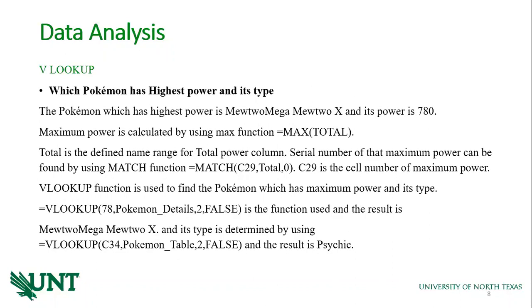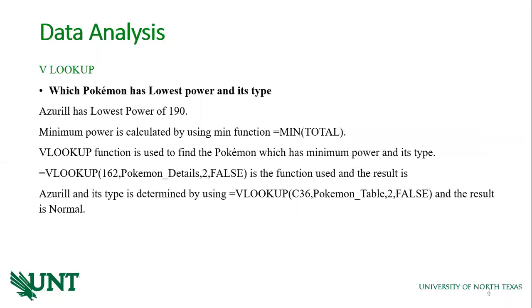I have used VLOOKUP functions for finding which Pokemon has the highest power and which type it belongs to, as well as which Pokemon has the lowest power and its type. The highest power Pokemon is Mewtwo with a power of 780 and it belongs to the Psychic type. The lowest power Pokemon is Sunkern with a power of 190 and its type is Normal.